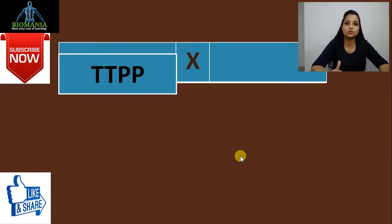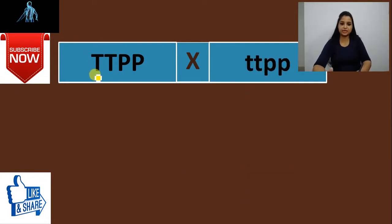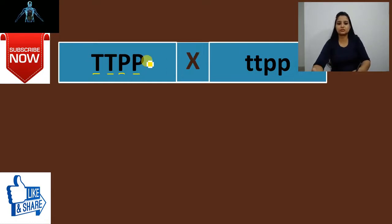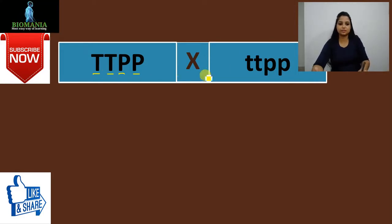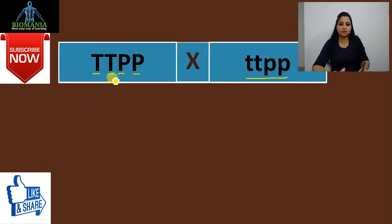As Mendel told us, parents should always be pure lines. This is the dihybrid cross, so here we are taking two traits: capital T capital T, which represents the tall character, and capital P capital P, which represents the color. Both are dominant traits and completely pure lines — this is the parent generation. The other parent has all recessive alleles: lowercase t lowercase t and lowercase p lowercase p. Let's see how the gametes will form for each.